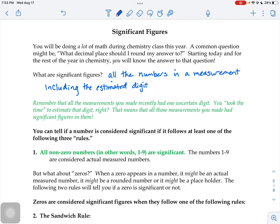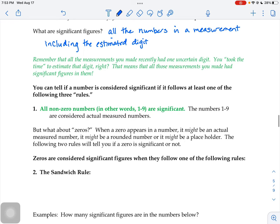You can tell if a number is considered significant when you see it on your iPad screens or in a homework problem, on a quiz question, if it follows one of these three rules. So rule number one is that all non-zero numbers one through nine are considered significant.